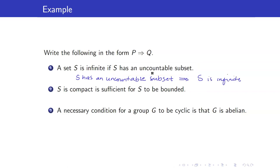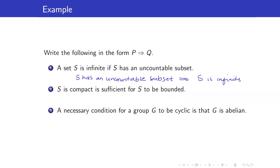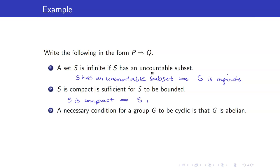Next: S is compact is sufficient for S to be bounded. We have 'sufficient,' and P is sufficient for Q means the first part is the premise. So therefore: if S is compact, then S is bounded.